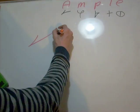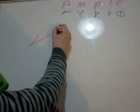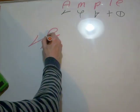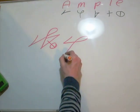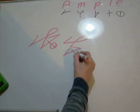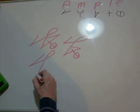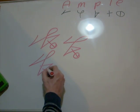So, A—should have curved earlier. P, L, E. A, M, P, L, E. A, M, P, L, E.